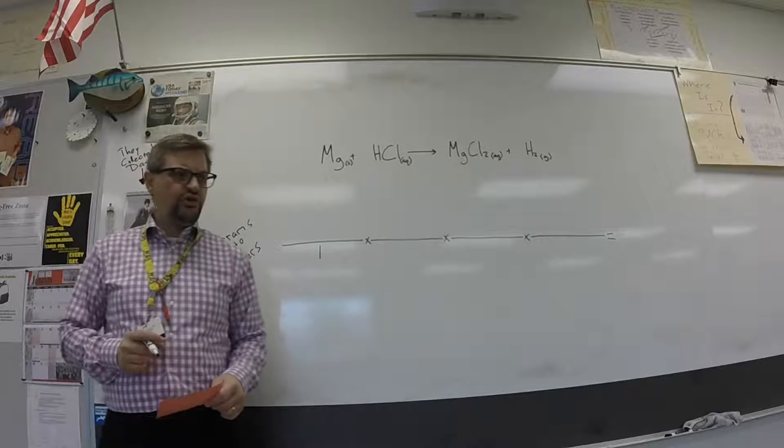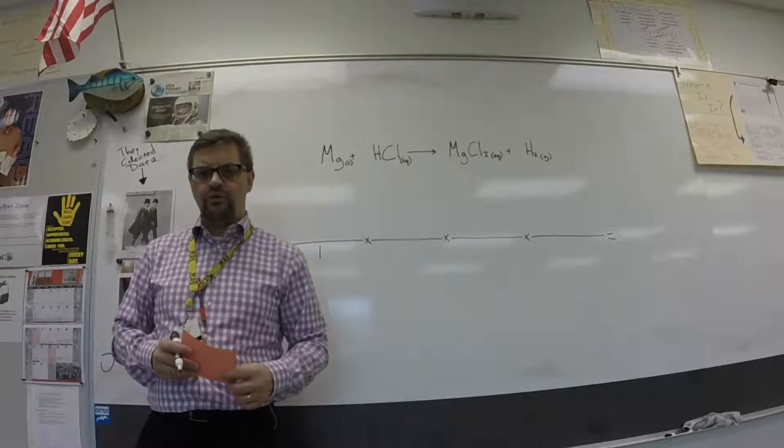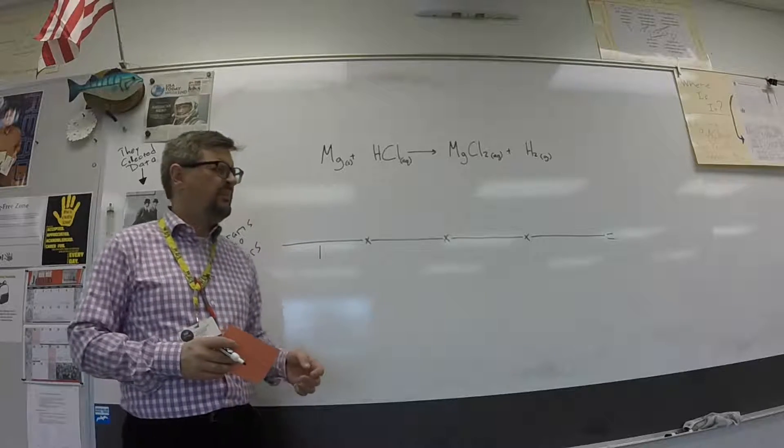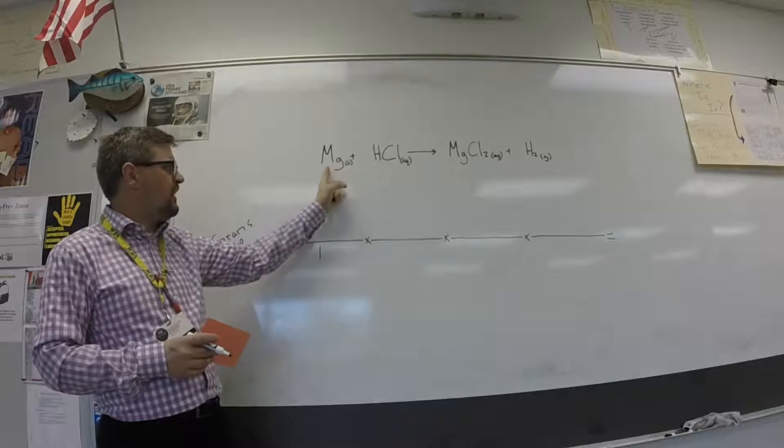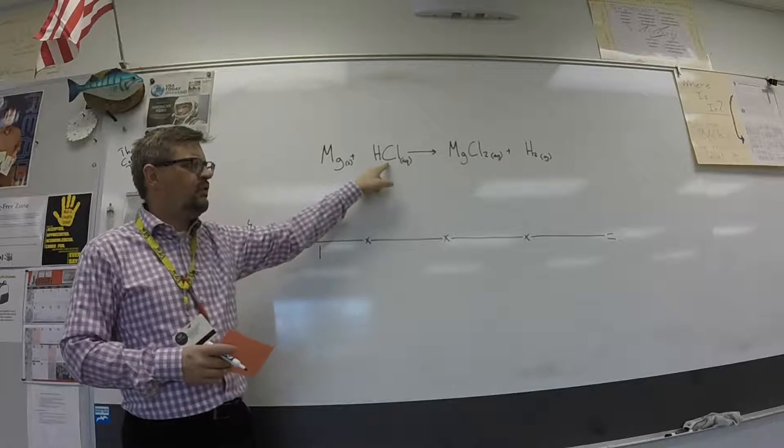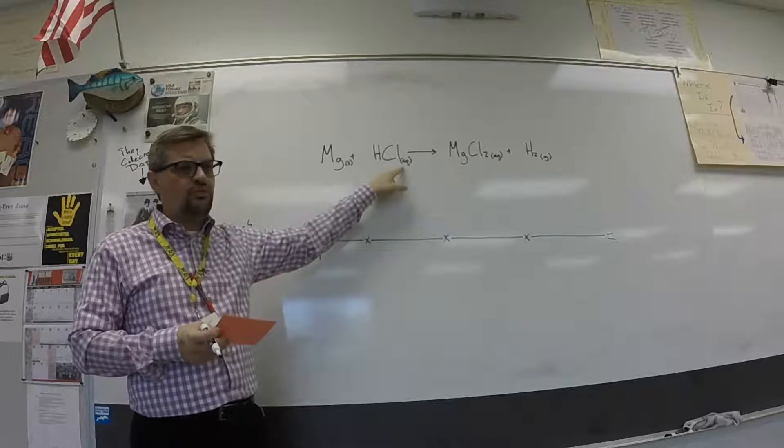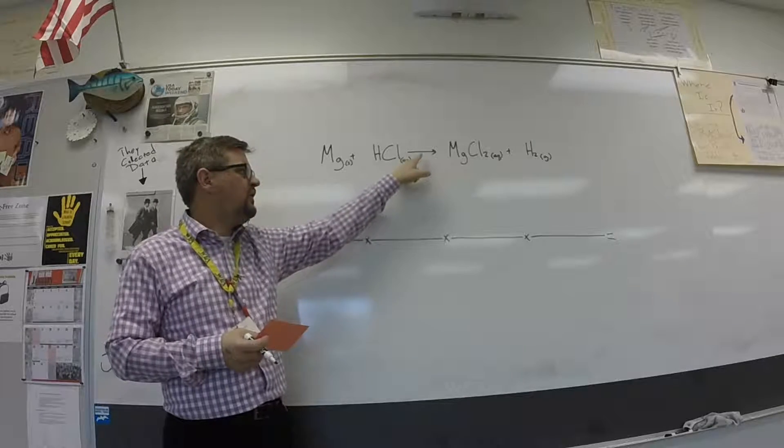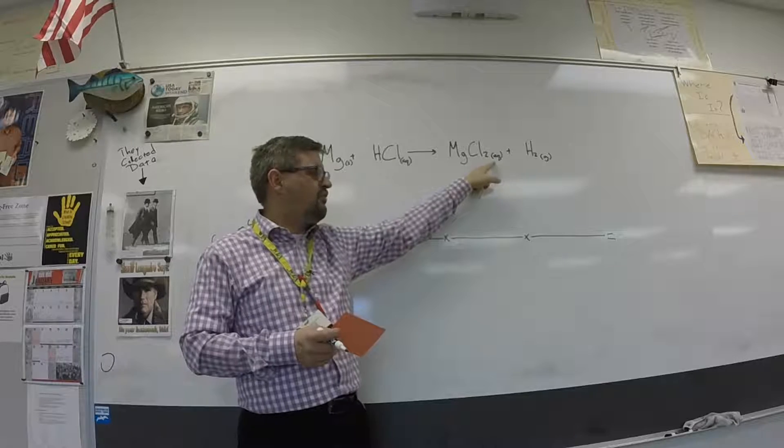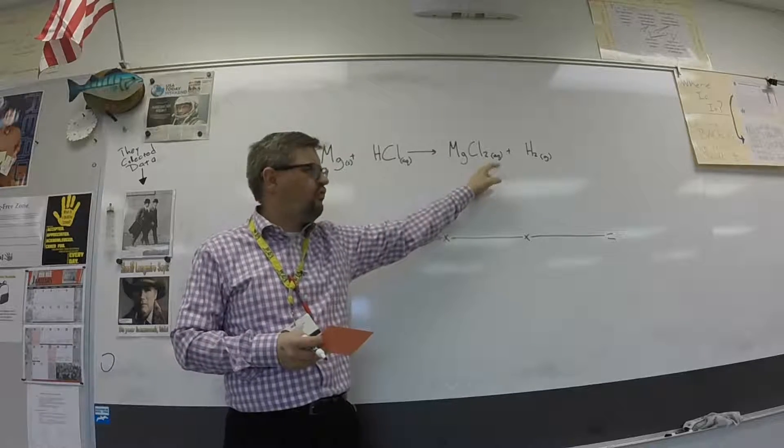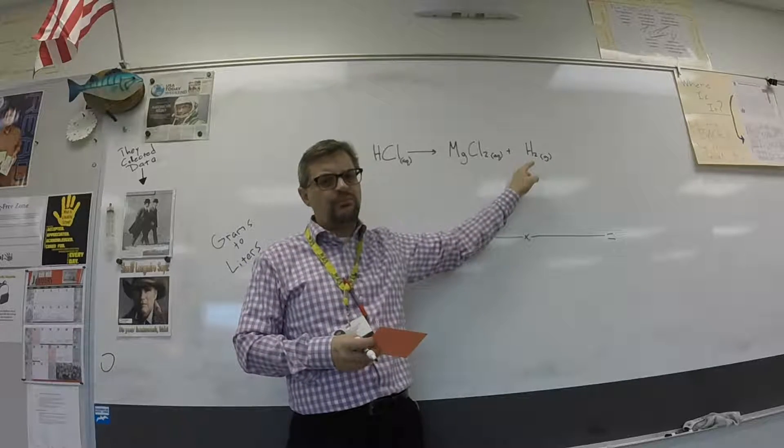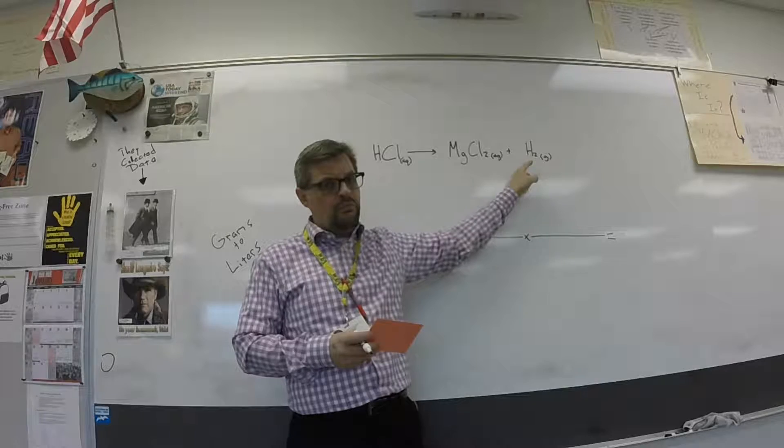So again, in stoichiometry, we're going to use balanced chemical equations to make predictions about what will happen in a chemical reaction. So here we have the reaction that you just witnessed. Magnesium, a solid metal, reacts with hydrochloric acid, which is an aqueous solution. The AQ, meaning the acid is dissolved in water. They react. The products, we get magnesium chloride, and that's also an aqueous water-based solution. And we get hydrogen gas. And of course, the hydrogen gas is what we capture in the glass jar and then measure.